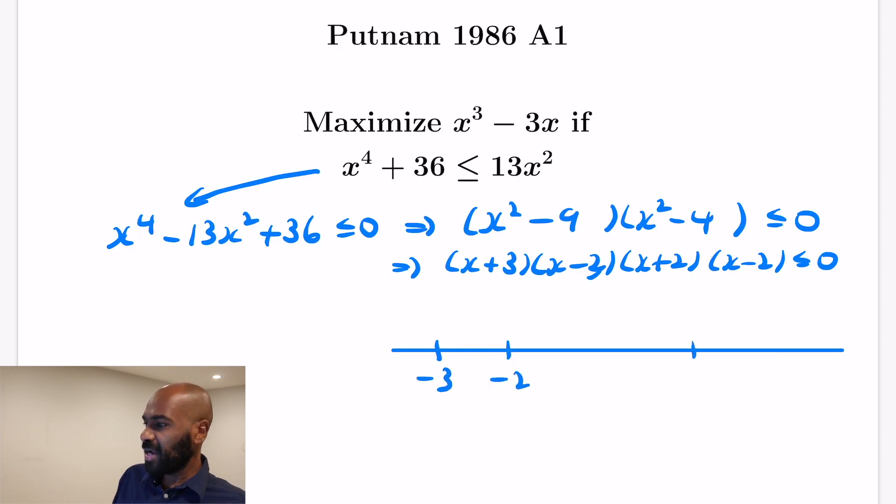So the factors are 0 at the values -3, -2, 2, and 3. Now all of them are negative below -3, so the product is going to be positive in that region.